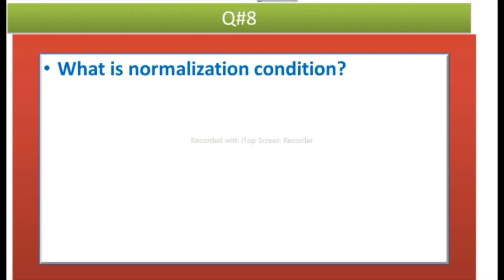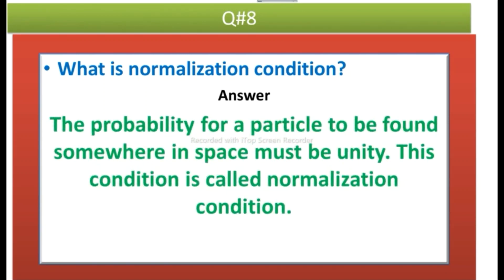Question number eight: What is normalization condition? Answer: The probability for a particle to be found somewhere in space must be unity. Unity means 100%. This condition is called normalization condition.